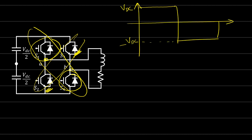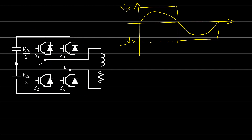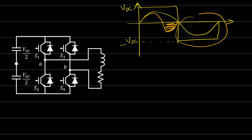For the output voltage: if the current is in phase with the voltage, current flows through the transistors. If the current is negative, the negative current flows through the diode. The same applies for the negative side — negative current flows in the transistors, and positive current flows in the diode.